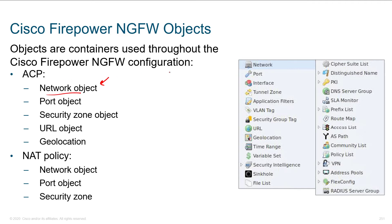Notice when we describe network objects here, we've got these various components within the list. Just below it, we see port, we see interface, we see tunnel zone, application filters, VLAN tags, security group tags. A lot of this should look fairly familiar from the ASA — it's a lot of the same concepts just stored in different locations. Even things like time ranges: we can define a time range and then use it elsewhere within our rules.